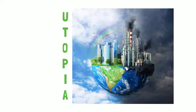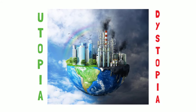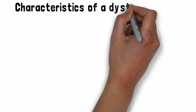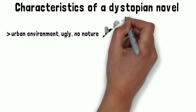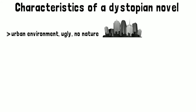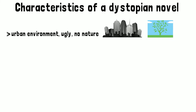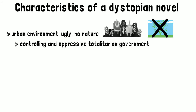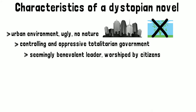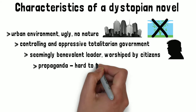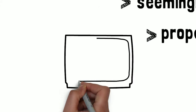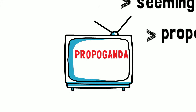Don't forget that a dystopia has the opposite characteristics of a utopia. A dystopian novel is generally set in an urban environment. You might think this represents progress, but it may also be ugly or polluted. The natural world is banished and distrusted, and nature is suppressed. There is always a controlling and oppressive totalitarian government, often led by a seemingly benevolent figurehead who is worshipped by the citizens. Propaganda is used to control the citizens, and with so much propaganda, it becomes very difficult to figure out what is true and what is fake news.